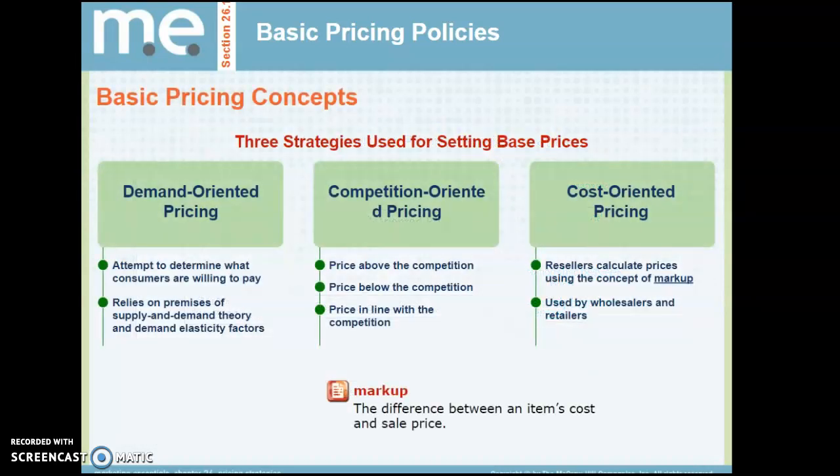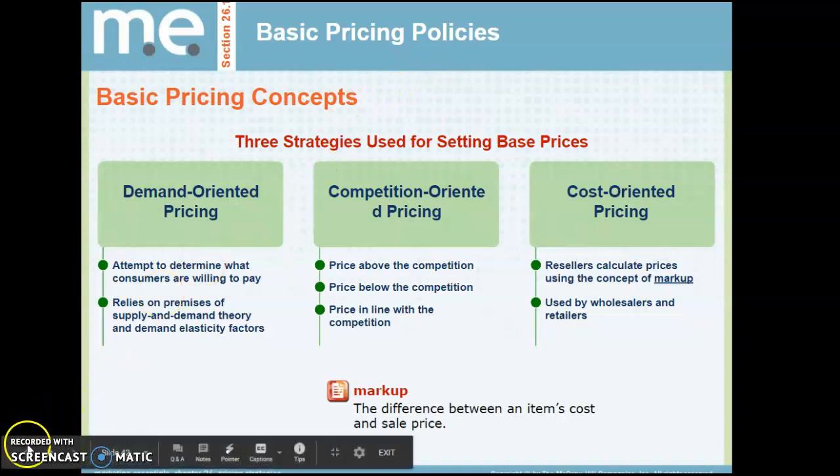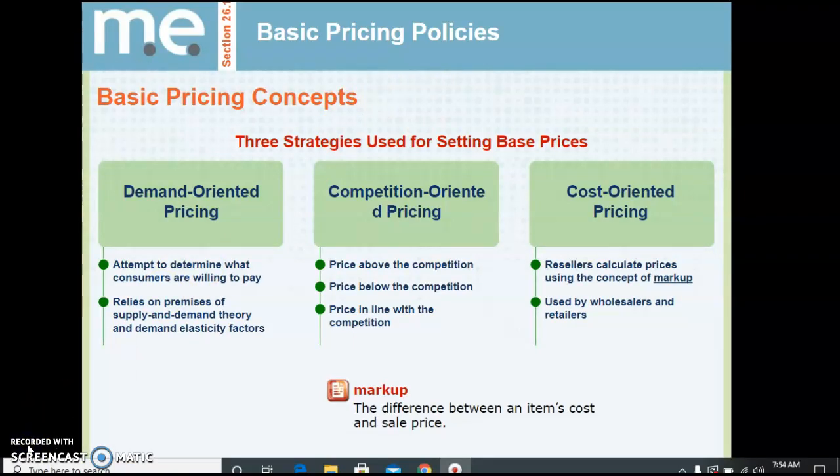Looking at these individually: demand-oriented means you're attempting to determine what customers are willing to pay — you don't want to out-price yourself and have people unwilling to pay what you're asking. Competition-oriented pricing means you can go above, below, or strictly in line with the competition. Cost-oriented pricing looks at what the product actually cost to make, then applies a markup.